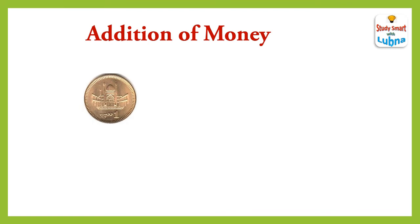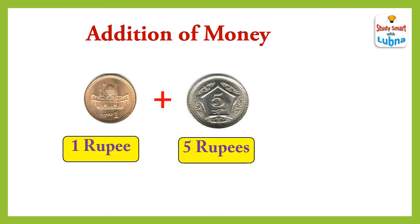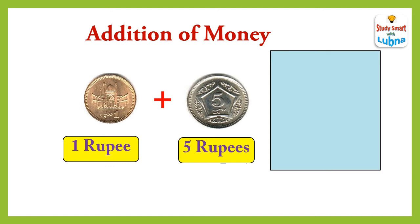When we add 1 rupee coin with 5 rupees coin, what will we get? Let's see. Rupee 1 plus rupees 5 — after adding them, we will get rupees 6.